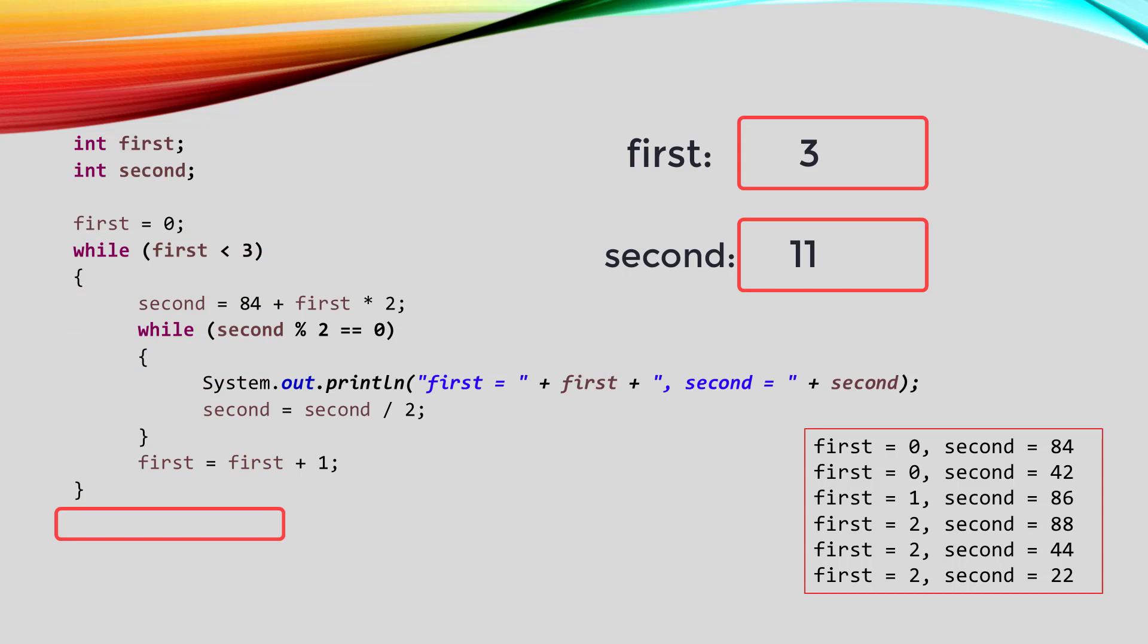So the thing to remember about nested loops is that the inside loop does its whole set of passes every time the outside loop does one pass.